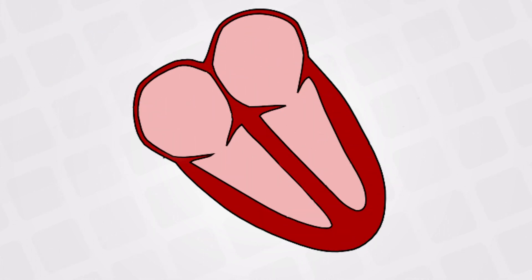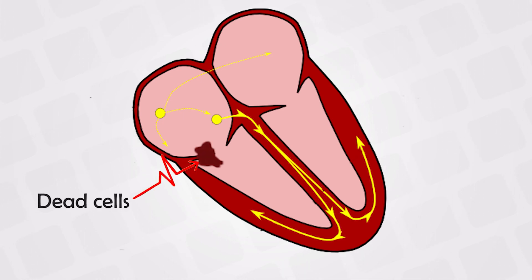In a normal heart, the electrical current is generated from the SA node and travels down the heart in a predetermined pathway. If a heart has some dead cells, it can block the normal pattern of the pathway and cause alternative patterns, resulting in arrhythmias.